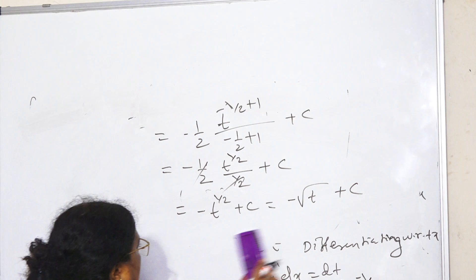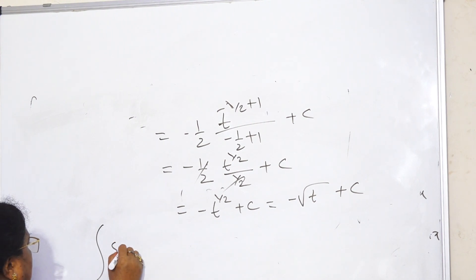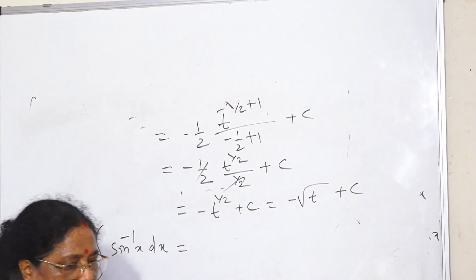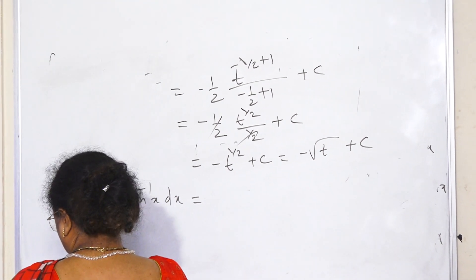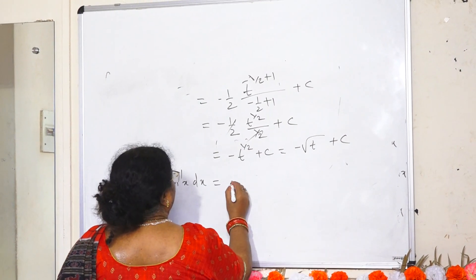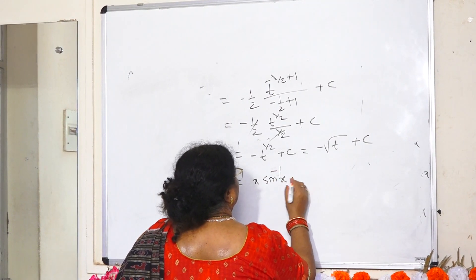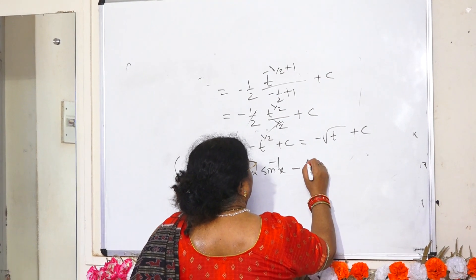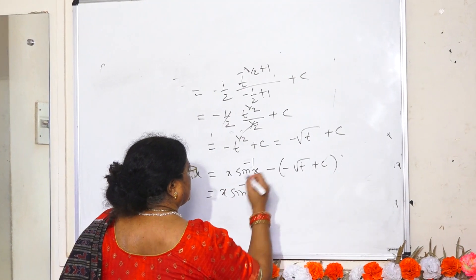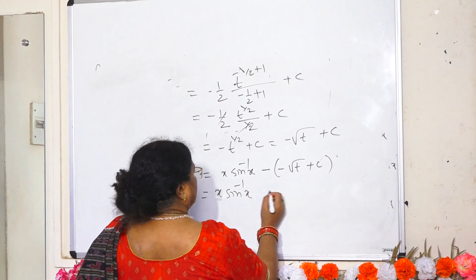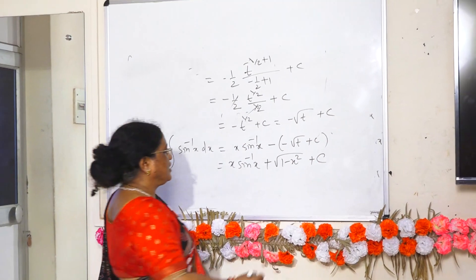Substituting back the value of t, we get integral of sin⁻¹x dx equals x·sin⁻¹x minus root(1 minus x²) plus c... which gives x·sin⁻¹x plus root(1 minus x²) plus c, where c is the constant of integration. This is the answer.